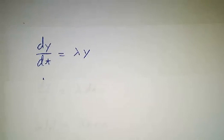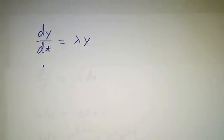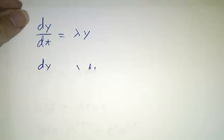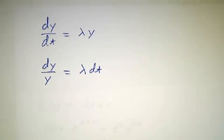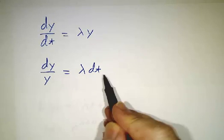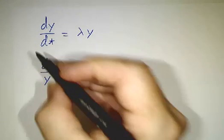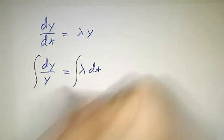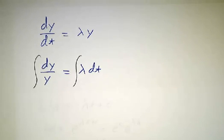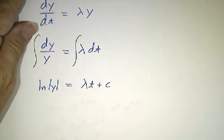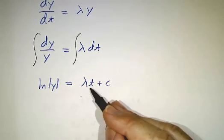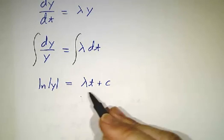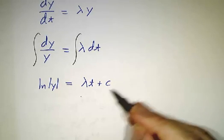So we have dy/dt equals lambda y. Divide both sides by y and multiply both sides by dt. This is a separable equation. We have nothing but y's on the left, nothing but t's on the right. Then we integrate both sides of the equation. The integral of dy/y is the natural log of |y| plus a constant. The integral of lambda is lambda t plus a constant, and we can combine the constants so we only have one of them.